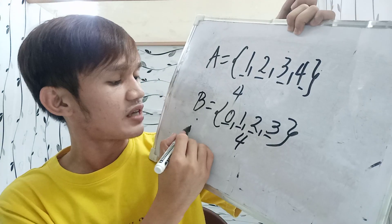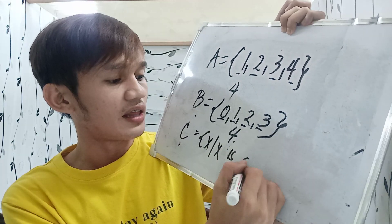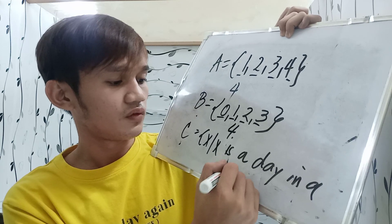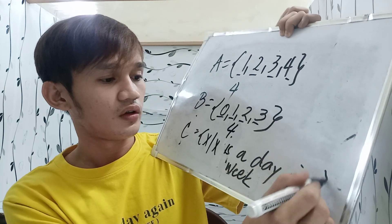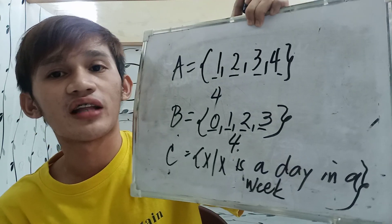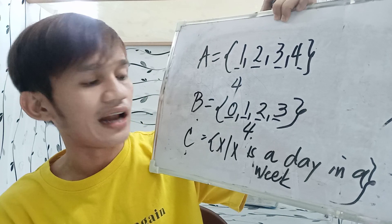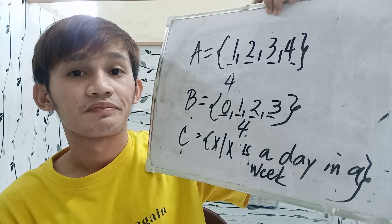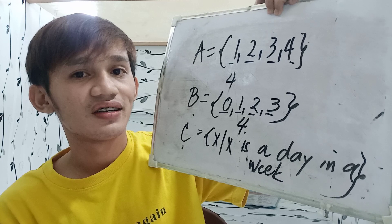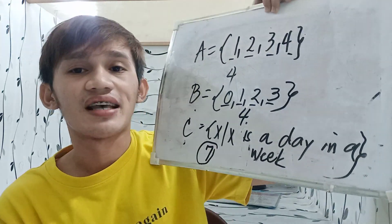How about SET C, where C equals X such that X is a day in a week? What is the cardinality of SET C? How many days do we have in a week? We have 7. So the cardinality of SET C is 7.